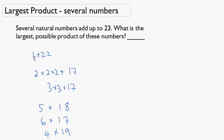For example, you could have 1 times 22, or 1 plus 22 is 23, and the largest product here is just 22. You could also have 4 times 19, 6 times 17, 5 times 18. You can have 2 times 2 times 2 times 17, because if you add 2 plus 2 plus 2 plus 17, that gives you 23. So, the question is, what is the largest product of these numbers?